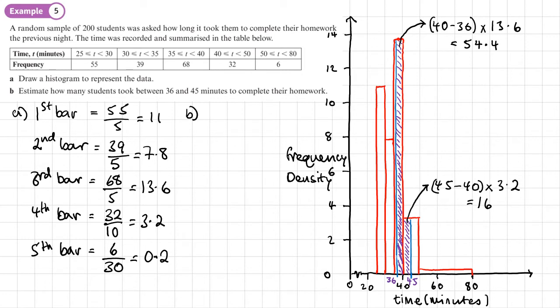So if we want to estimate, we need to do 54.4 plus 16. And that gives me 70.4. And what does 74.4 stand for? The number of students, 70.4 students.